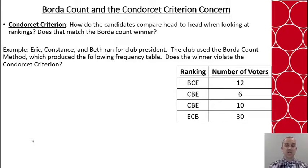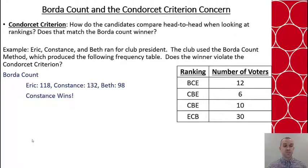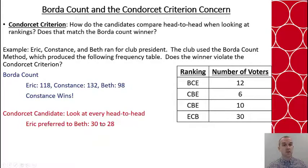Now, is there a Condorcet candidate? We already found the Borda count results, with Constance winning. Let's look at the head-to-heads. For Eric versus Beth: Beth beats Eric with 12, 6, and 10 votes — that's 28 total — but Eric beats Beth with 30. So Eric is preferred over Beth.